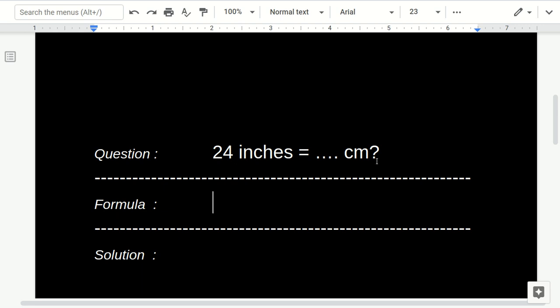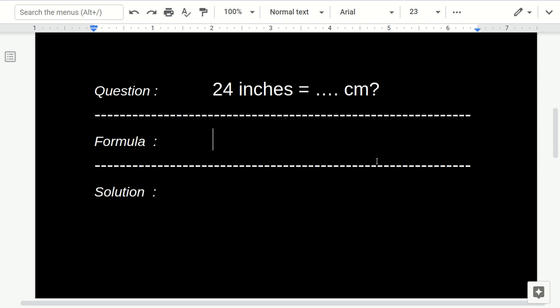The conversion factor is 1 inch equals 2.54 centimeters. That's the formula.